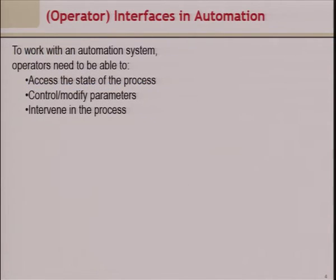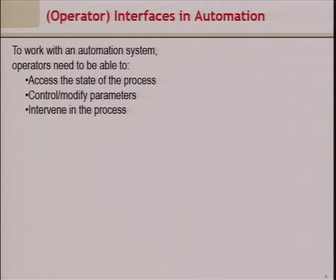For operator interface in automation, you need to access the state of the process — monitor certain variables and log or visualize them. Second, you want to control or modify those parameters at some point. Third, you want to intervene in the process — stop it, modify the route, or make changes — so you provide a user interface for human intervention.